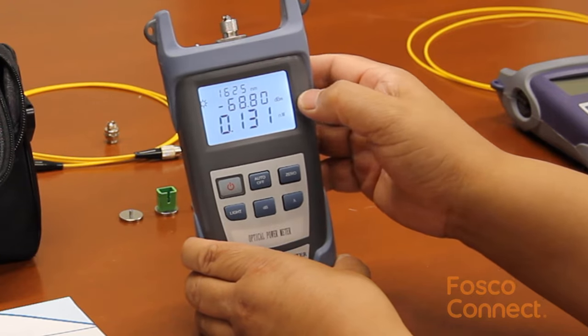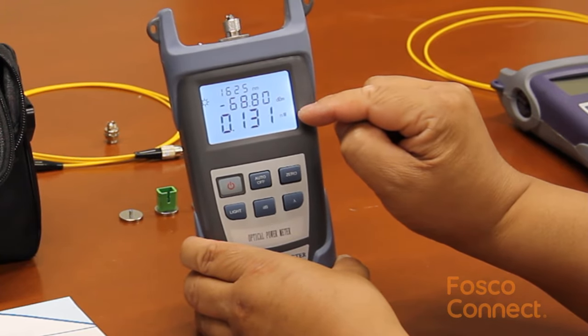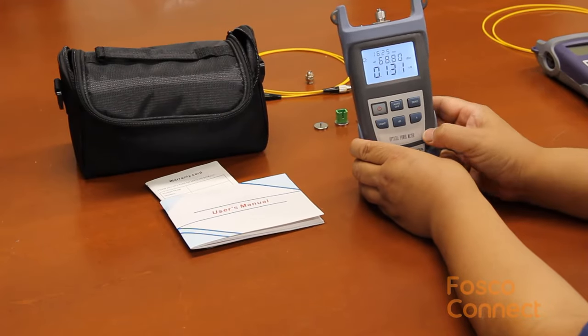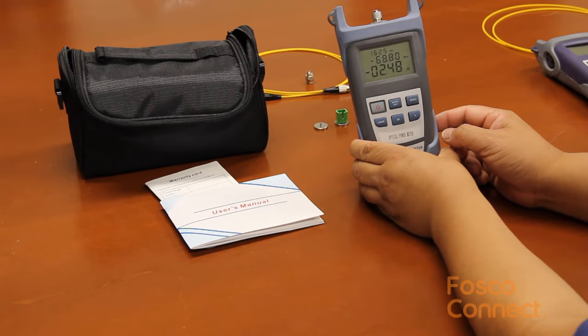It shows a power measurement in dBm on the second row and nanowatt on the third row. So let's use a laser light source to test a fiber jumper cable.